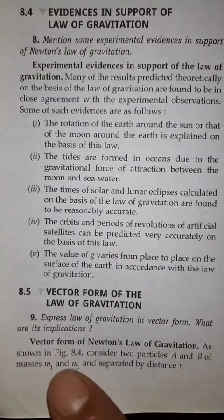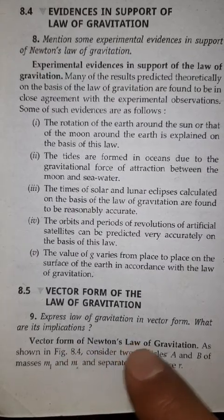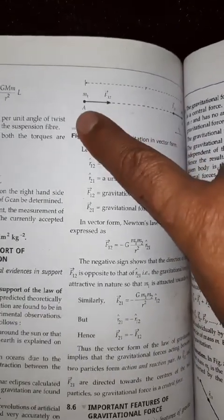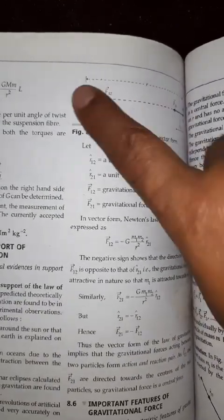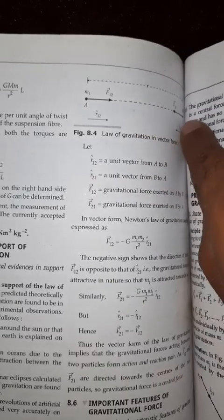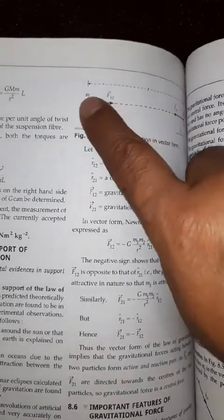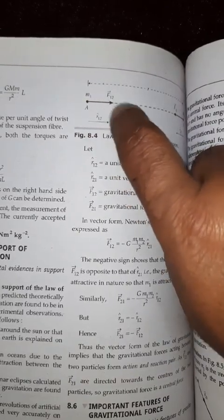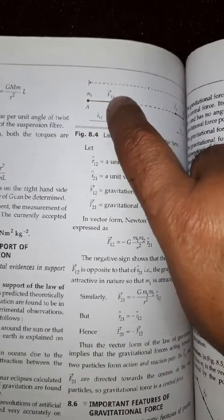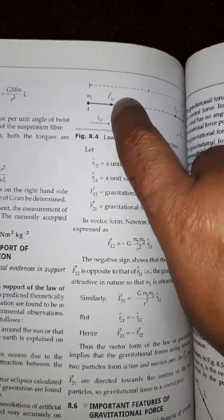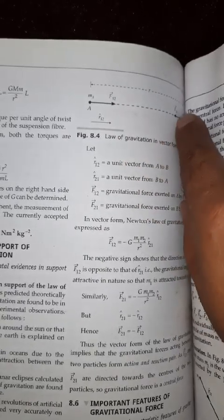Next is vector form of the law of gravitation. What is the vector form? You know vector means direction. So you can see, suppose there are two particles M1 and M2. I told you that M1 is applying force on M2, an attractive force, and M2 is applying force on M1. So that is called force applied on first particle by second mass, and this is force applied on second particle by the first mass.